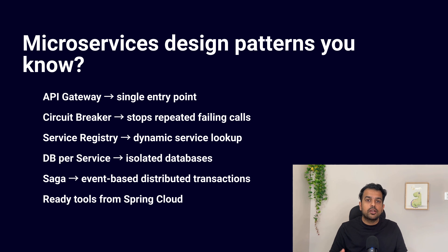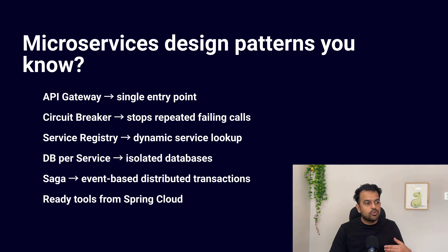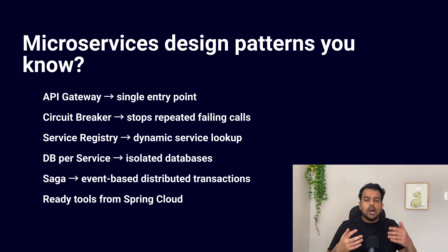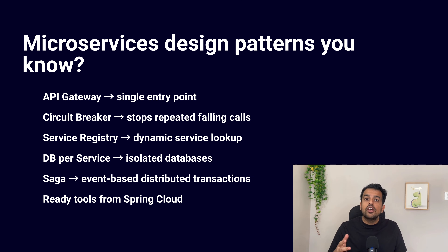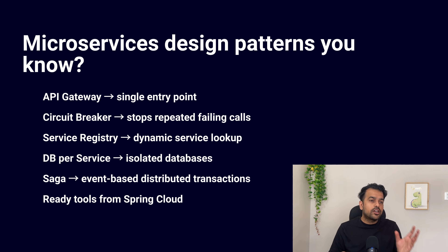The second pattern is the Circuit Breaker pattern. Here we protect our system from a failing or slow service. If a service keeps failing, the circuit breaker opens and stops sending more calls to it for some time. This protects other services as well and avoids cascading failures. You can also return a default fallback response. The third pattern is Service Discovery. In microservices, instances can scale up or down and IPs can change — there is no fixed IP per service. We use a service registry where services register themselves, and other services ask the registry to find the current location of a service. This makes scaling and dynamic routing possible.